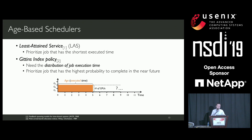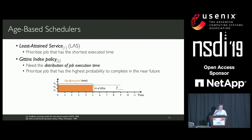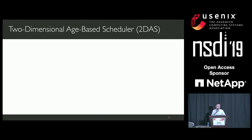With the distribution information, the algorithm assigns a Gittins index to each job based on its current age. The Gittins index of a job represents the probability of this job completing in the near future. So in order to minimize overall job completion time, jobs with a larger Gittins index should have higher priority to run. Based on these two algorithms, we propose our Two-Dimensional Age-Based Scheduler, or 2DAS.